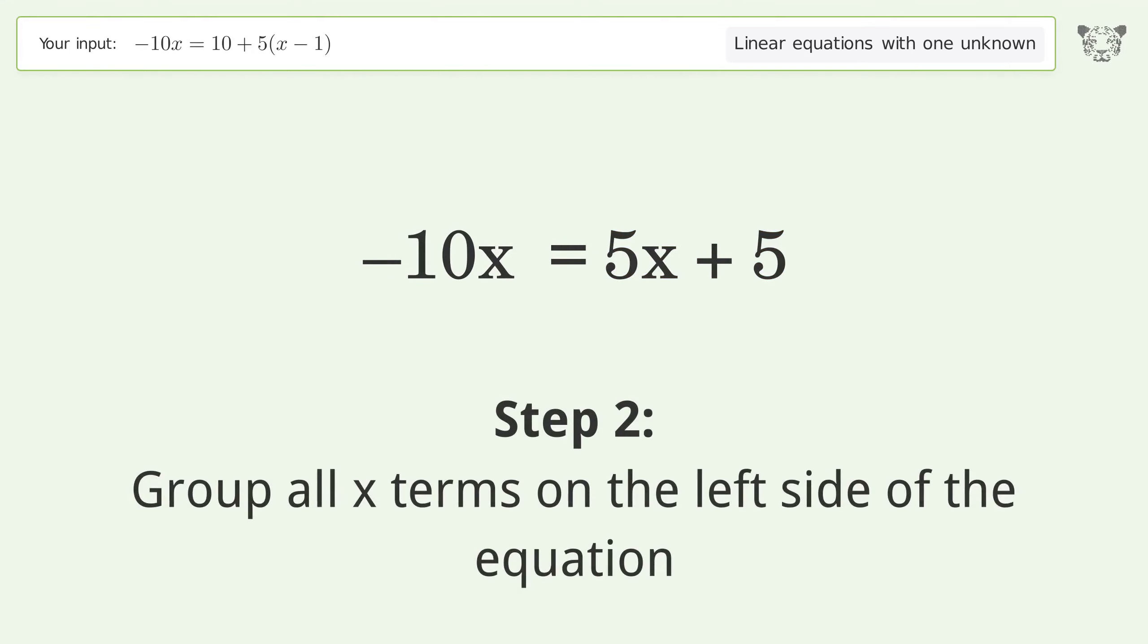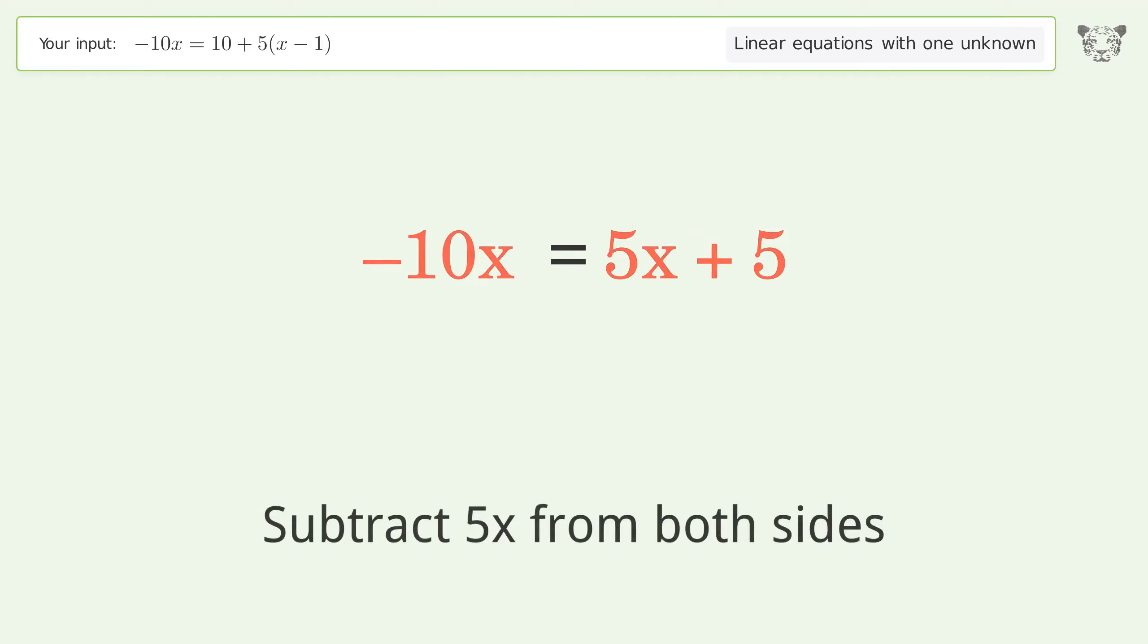Group all x terms on the left side of the equation. Subtract 5x from both sides.